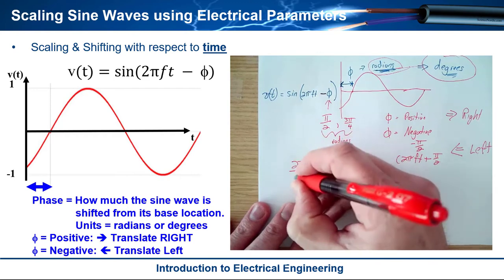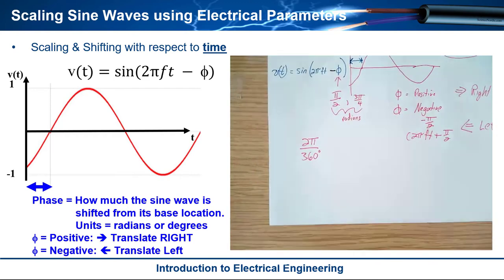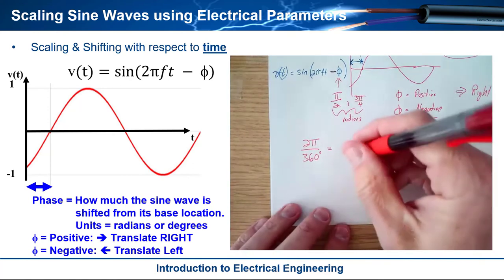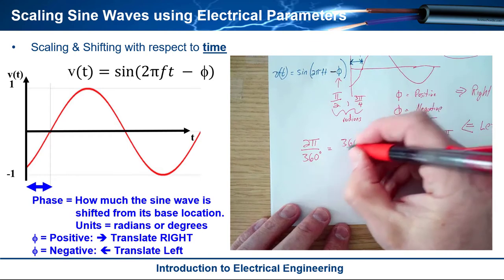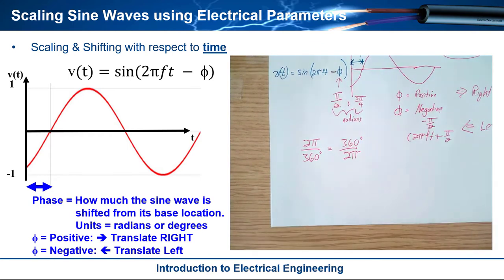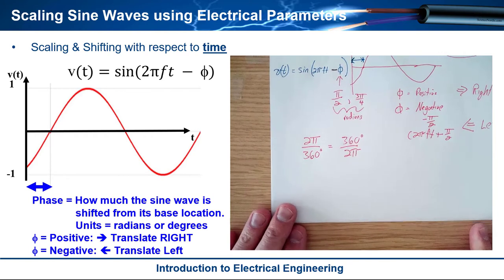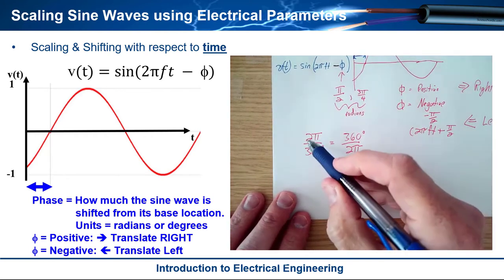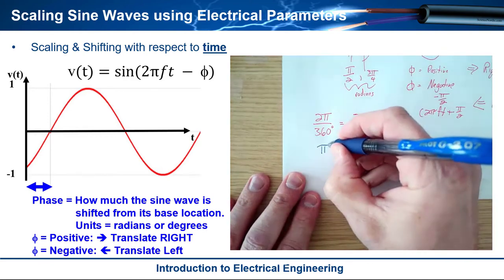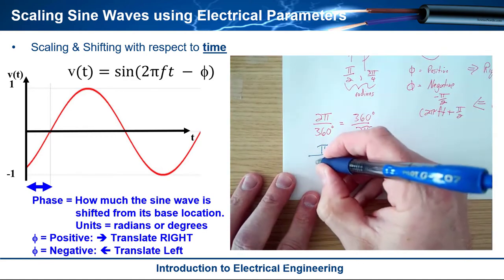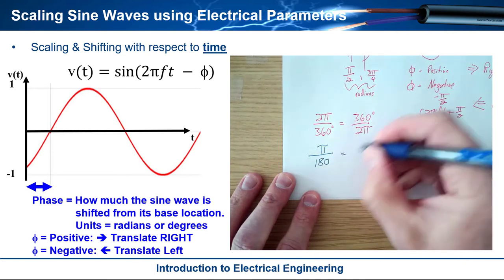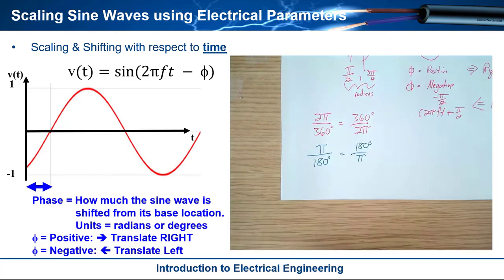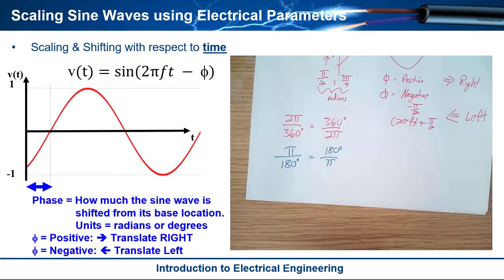All we really need to do is convert between degrees — the way we talk in electrical engineering — into radians. It's very simple: 2π radians equals 360 degrees. That is essentially a conversion factor, and we can also write it as π over 180 or 180 over π. We use these factors to convert degrees into radians.